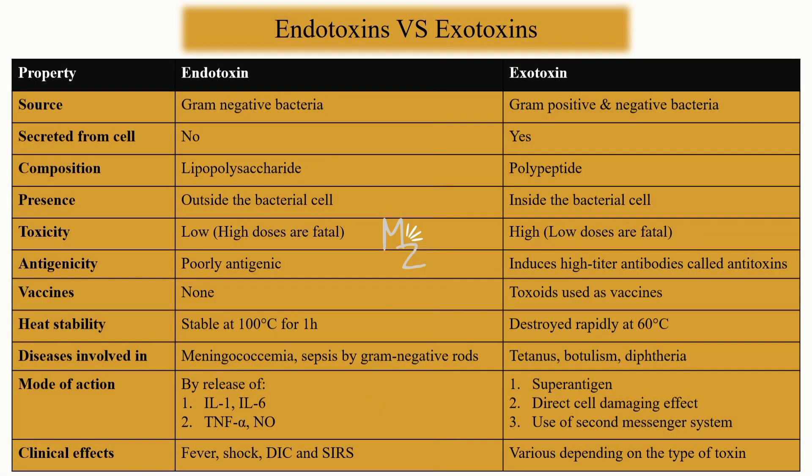Regarding secretion from the cell: in the case of endotoxin, the answer is no — it is not secreted from the cell. Instead, it is released upon rupture of the cell. Exotoxin, however, is made inside the cell and is actively released. The chemical composition of endotoxin is lipopolysaccharides (LPS), while exotoxin is made up of polypeptide.